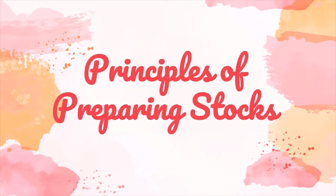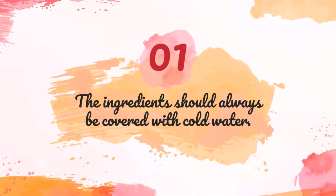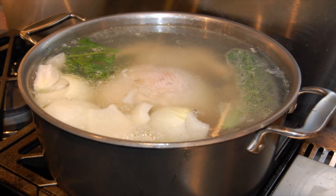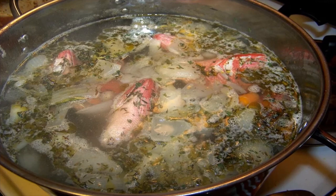Here are the principles of preparing stocks. Number 1, the ingredients should always be covered with cold water. When bones are covered with cold water, blood and other impurities dissolve. As the water heats, the impurities coagulate and rise to the surface, where they can be removed easily by skimming. If the bones were covered with hot water, the impurities would coagulate more quickly and remain dispersed in the stock without rising to the top, making the stock cloudy.